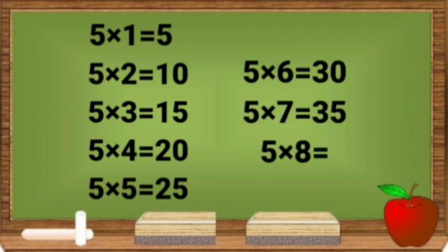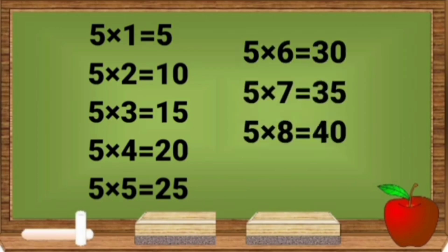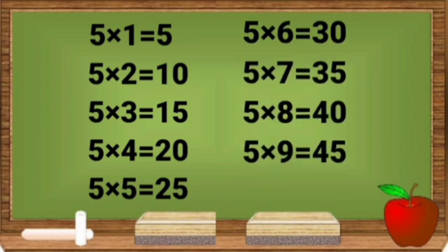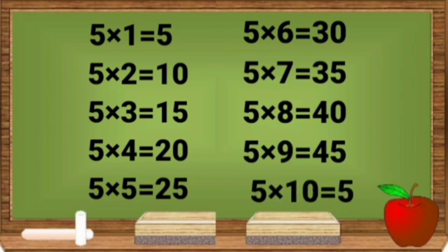5 7s are 35. 5 8s are 40. 5 9s are 45. 5 10s are 50.